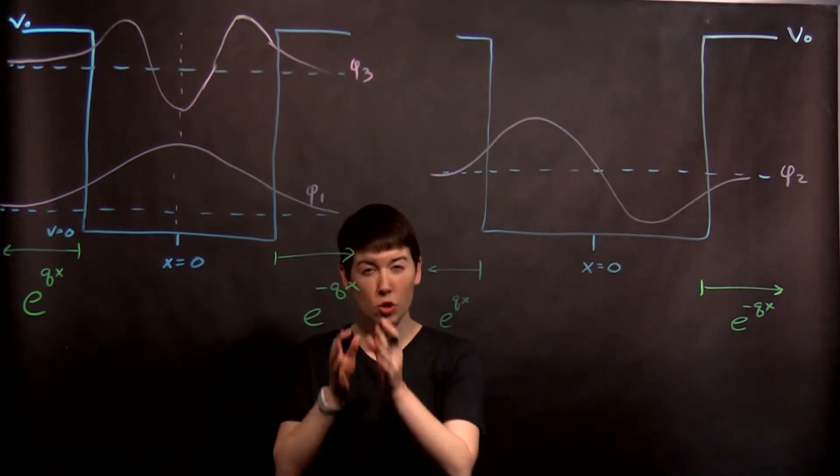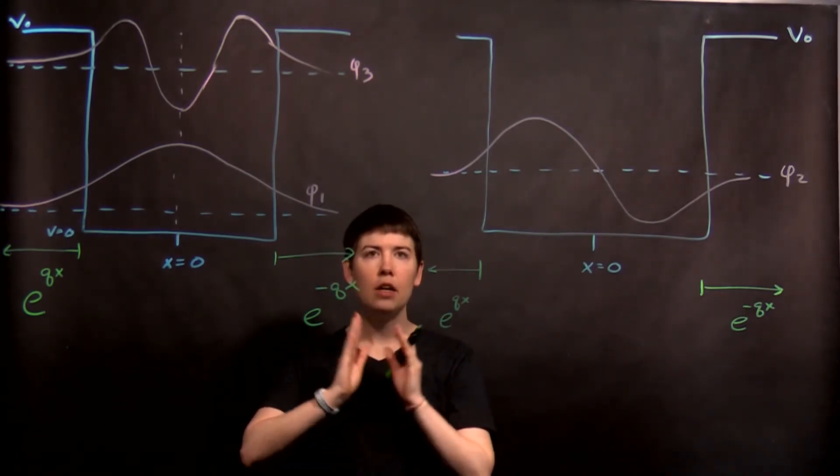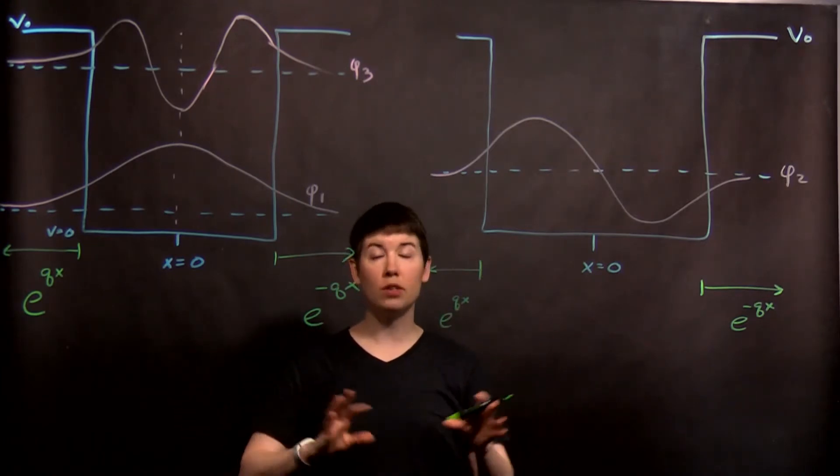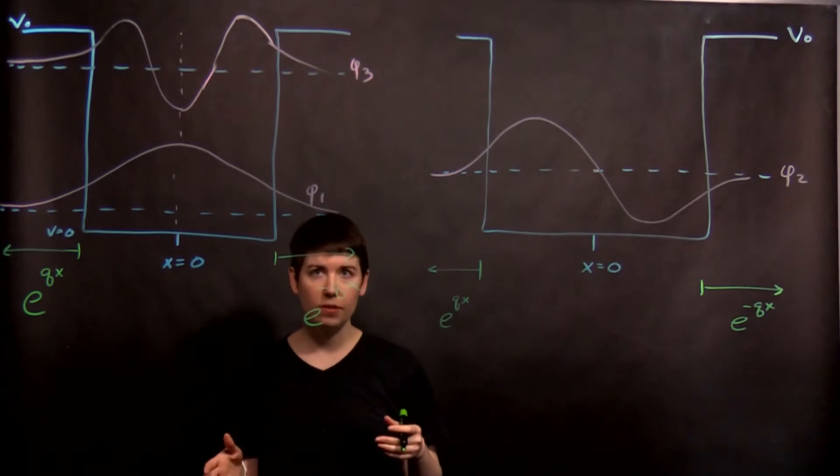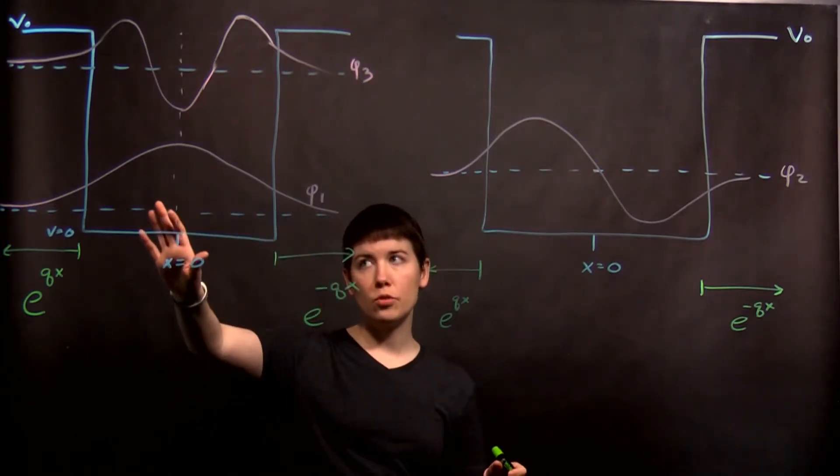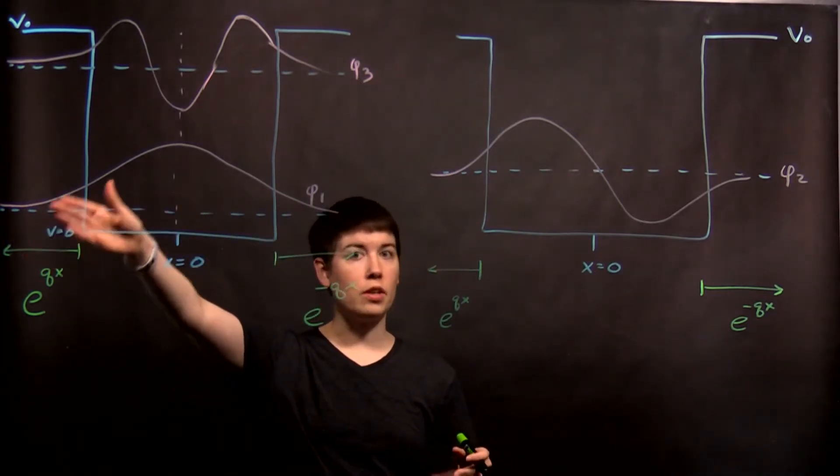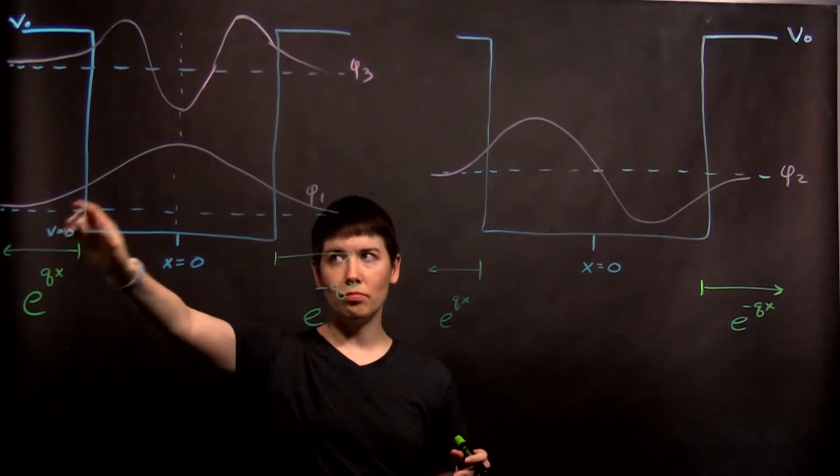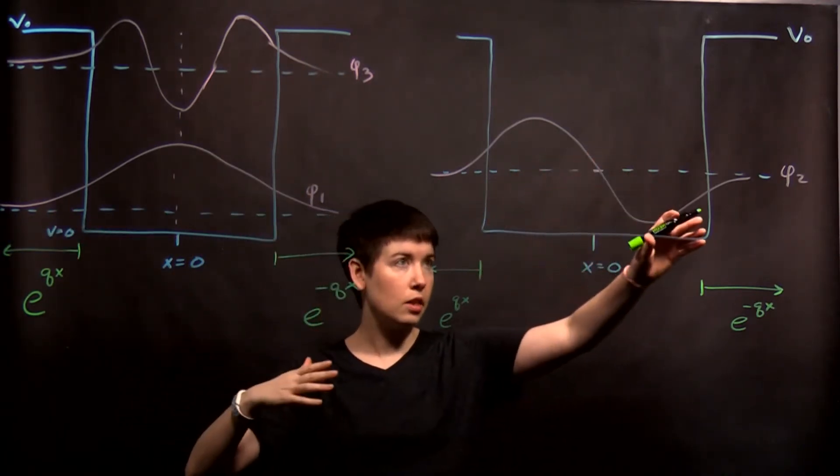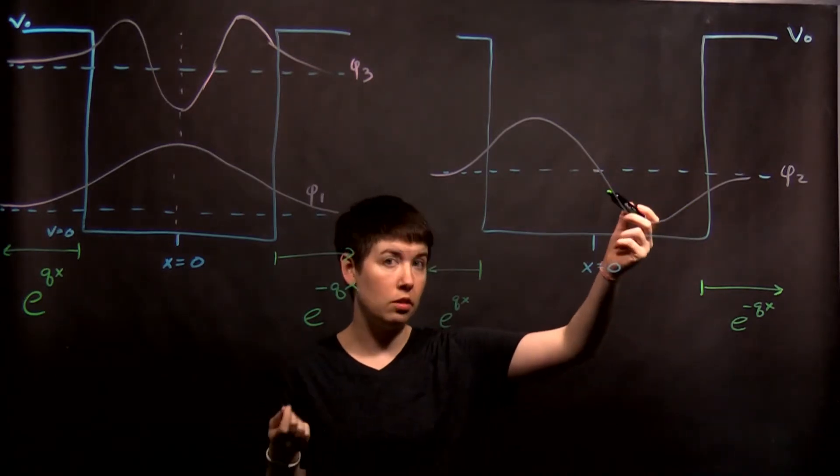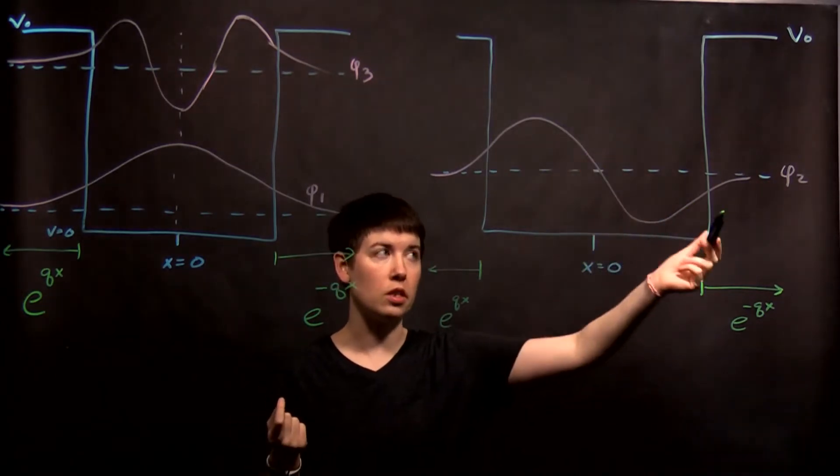So in the prior video, I kind of chose one path to go down, and I'm not going to do a lot of math here, but I want to graphically go through some arguments. One thing that we've seen is that our first energy eigenstate would just have zero nodes, so it's just kind of one bump. And then when we go to our second energy state, it needs to have one node, so it looks something like this.